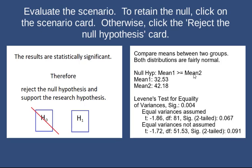Since this is a one-tail hypothesis test, we take the two-tail significance value and divide it in half. So 0.091 divided in half gives approximately 0.0455, and that's less than our alpha level of 0.05. So we will reject the null hypothesis.